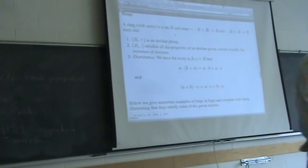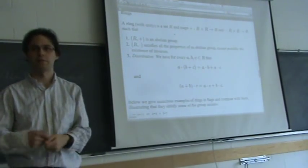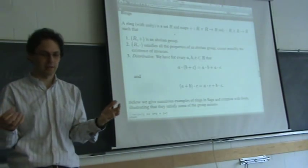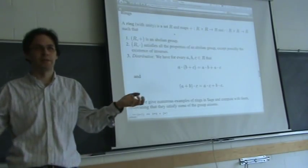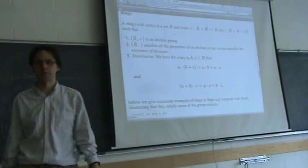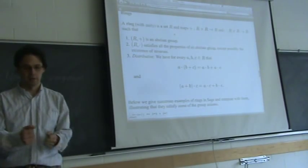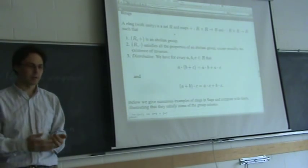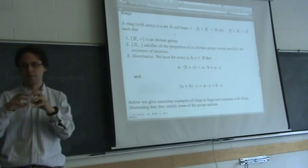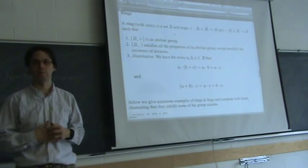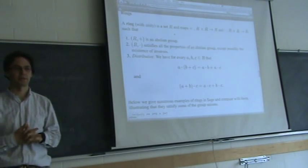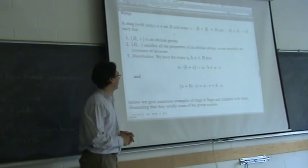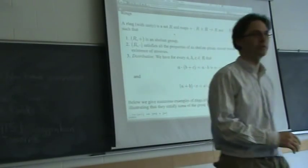A ring is like a group but you throw in another operation. Just think about it: the integers under addition are an abelian group, but you also have multiplication — a ring remembers that too. So a ring is an abelian group plus a little bit more. They're extremely ubiquitous in mathematics. Before we go further: is the set of prime numbers a ring? No, absolutely not. What about the set of natural numbers — all numbers greater than or equal to zero? That's not a ring either, because there are no additive inverses; for example, 5 doesn't have an inverse.